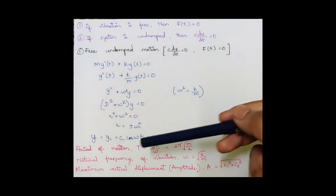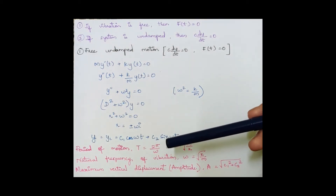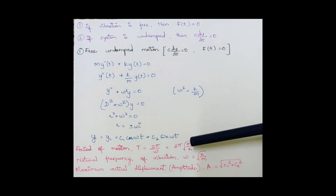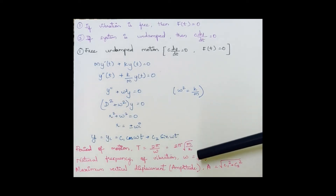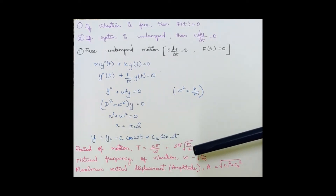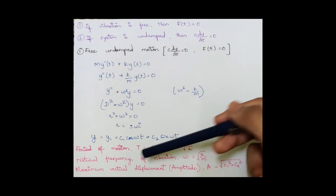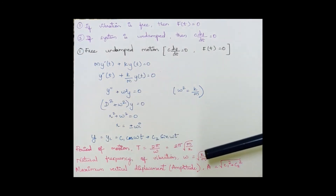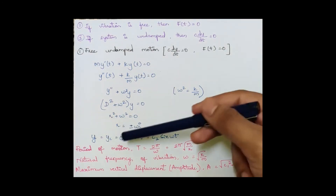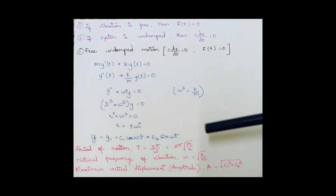A few important formulas: the period of motion is T = 2π/ω, where ω = 2π√(m/k). The natural frequency of vibration is ω = √(k/m). The maximum vertical displacement — the amplitude — is given by √(c₁² + c₂²), where c₁ and c₂ are the arbitrary constants in the complementary function.